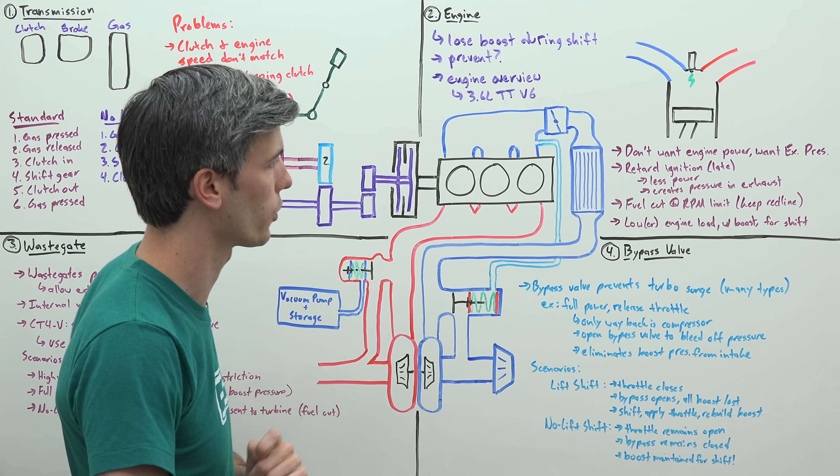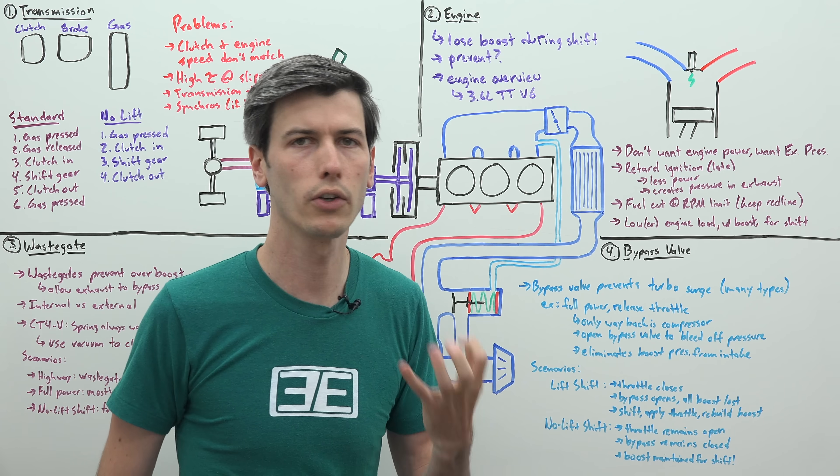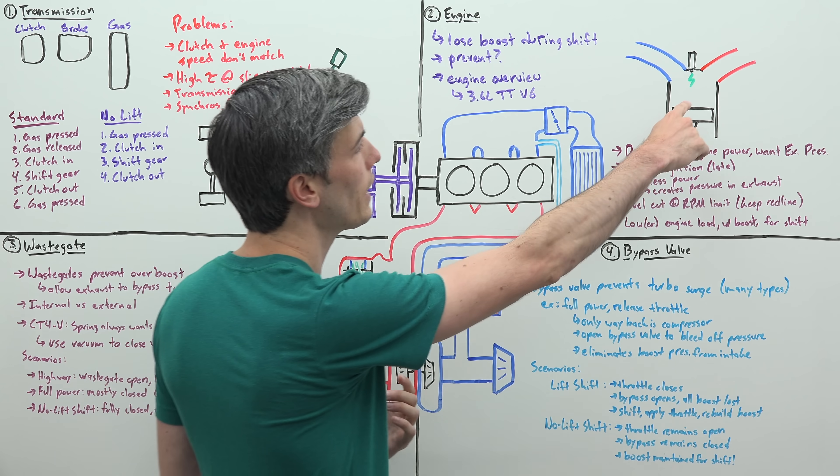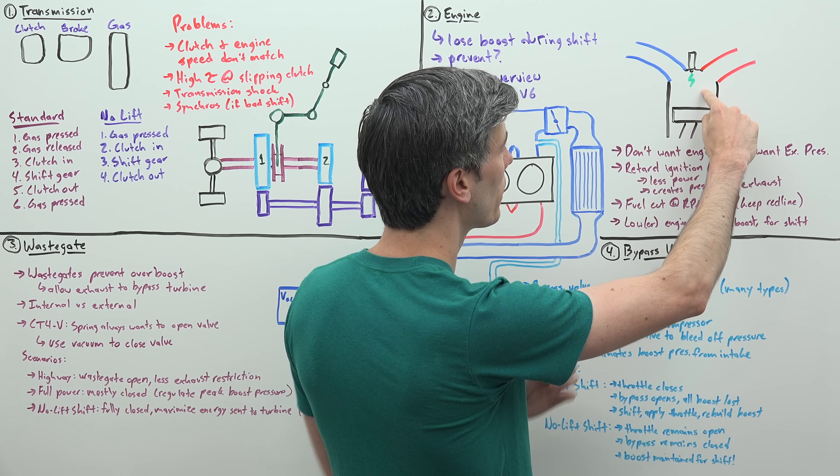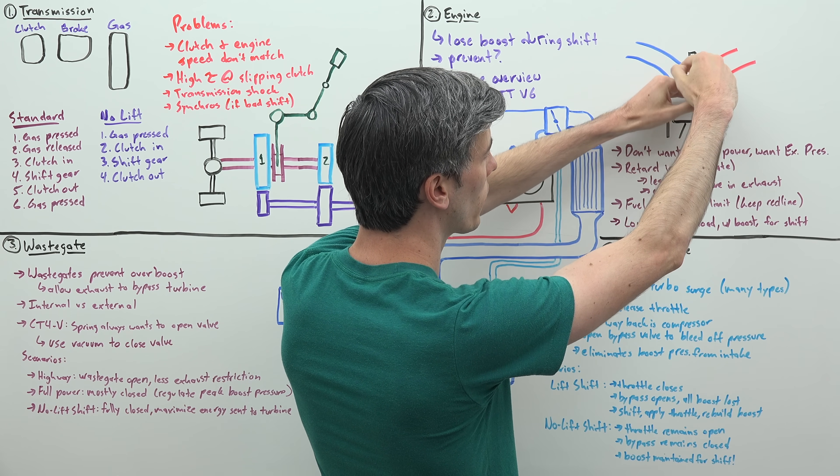So one of the clever things that you do is you want exhaust pressure, but not necessarily cylinder pressure. So how do you do that? Well, you retard your ignition timing. So you delay when you have your spark fire, because instead of that piston being right at the top and then sparking, and you have all that pressure turning into useful work, pushing that piston down...